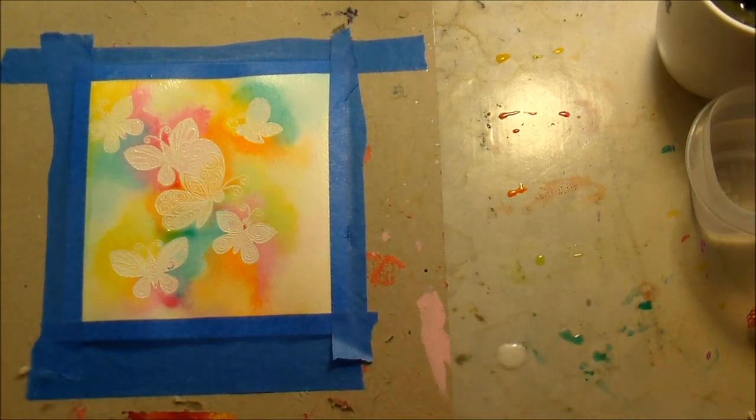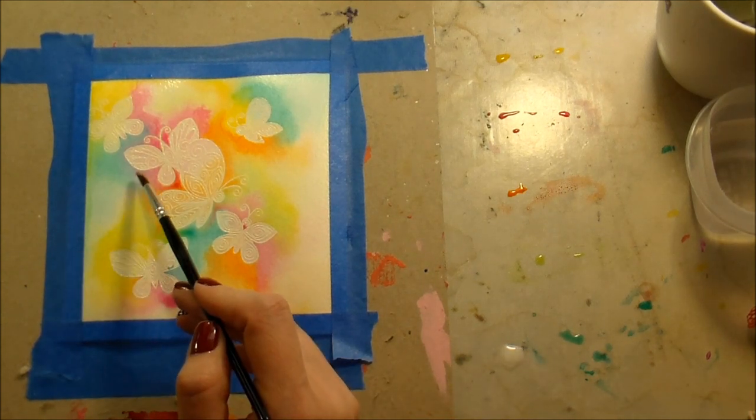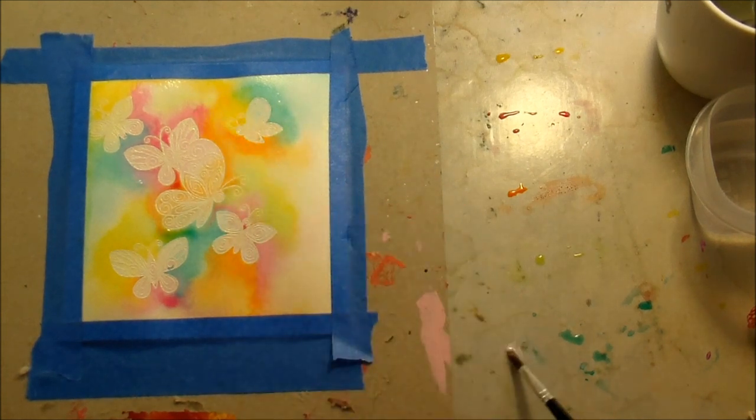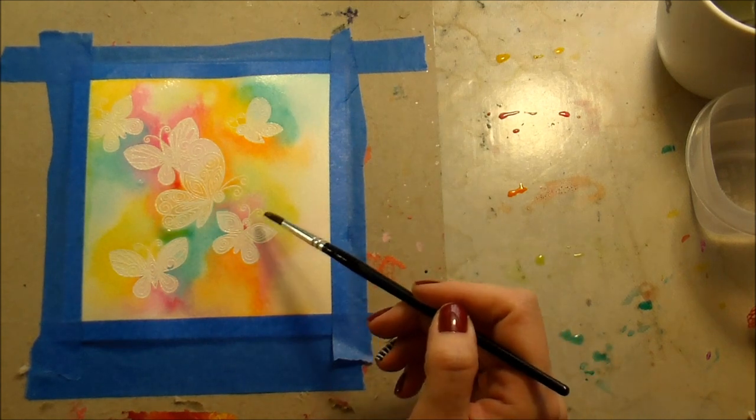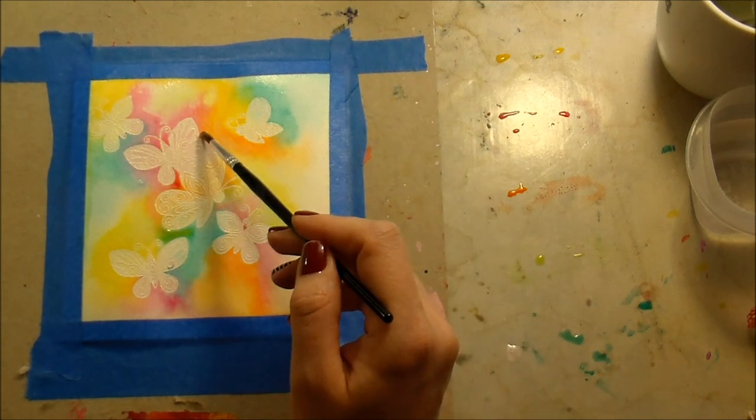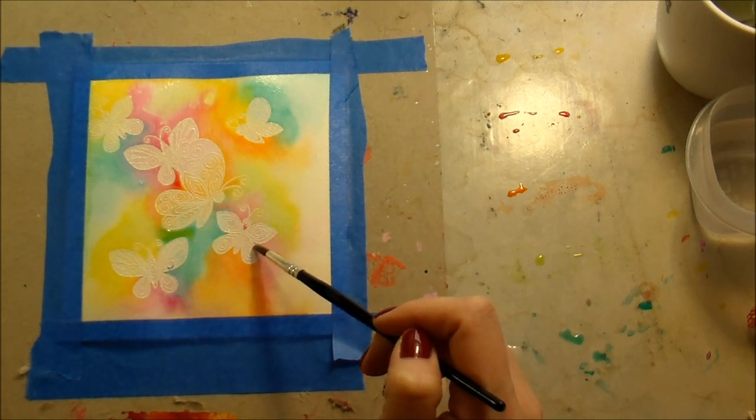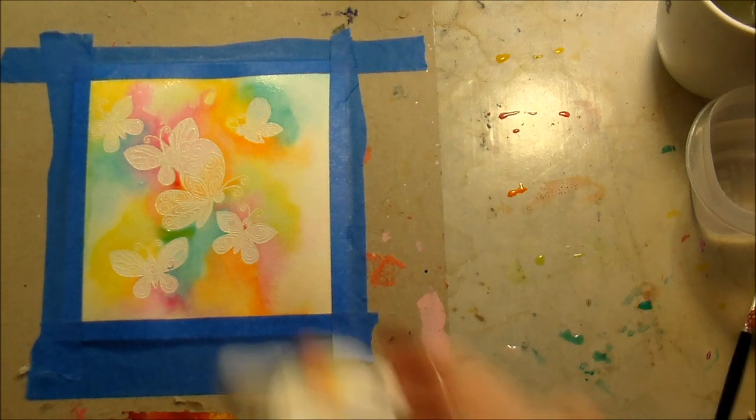Before I heat set it I wanted to add some shimmer so I'm using W plus nine shimmer spray and I'm just putting down like one little squirt of it on my craft mat and then I'm just going to add that in various places. It will blend out into those colors and then when it dries it gives a super pretty shimmer. This isn't something that you need to do, it's just something that I like to do because I like things that are shiny and shimmery. Glitter. Oh I love me some glitter.